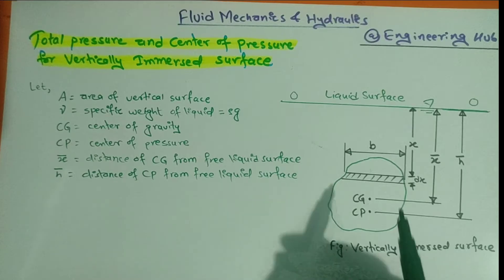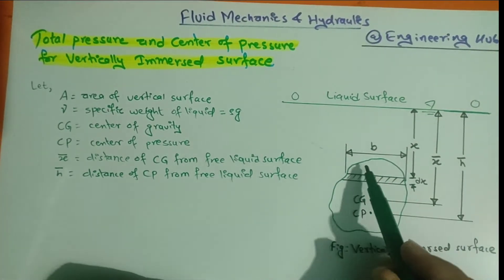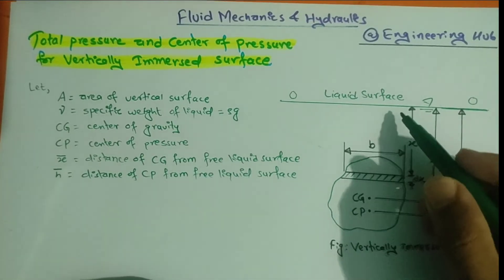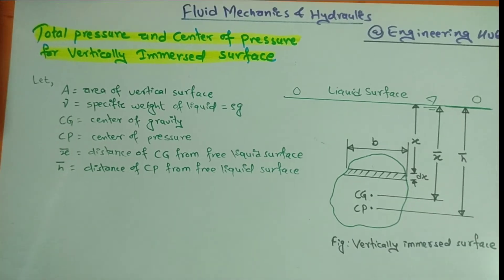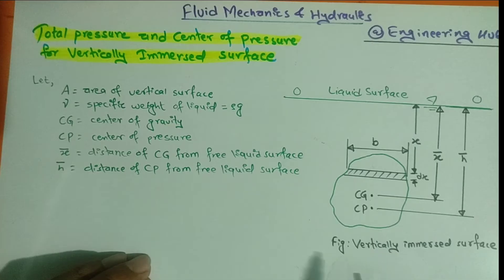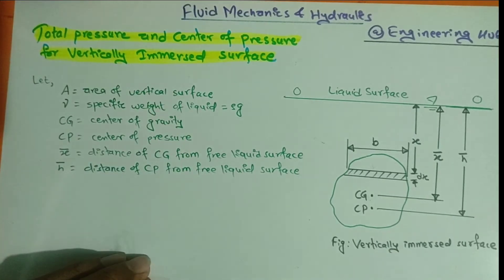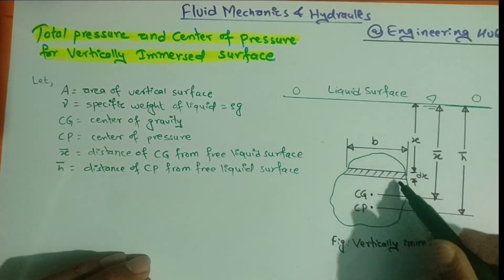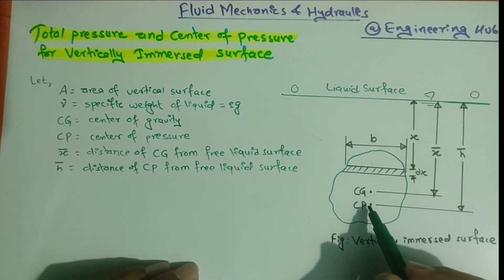Here is a liquid surface OO, below which a vertically immersed surface is placed inside the liquid. The liquid surface will create pressure on this surface, from which we can calculate the total force — called total pressure — which is the force created by the liquid towards this body. The total pressure will act from a point called the center of pressure.